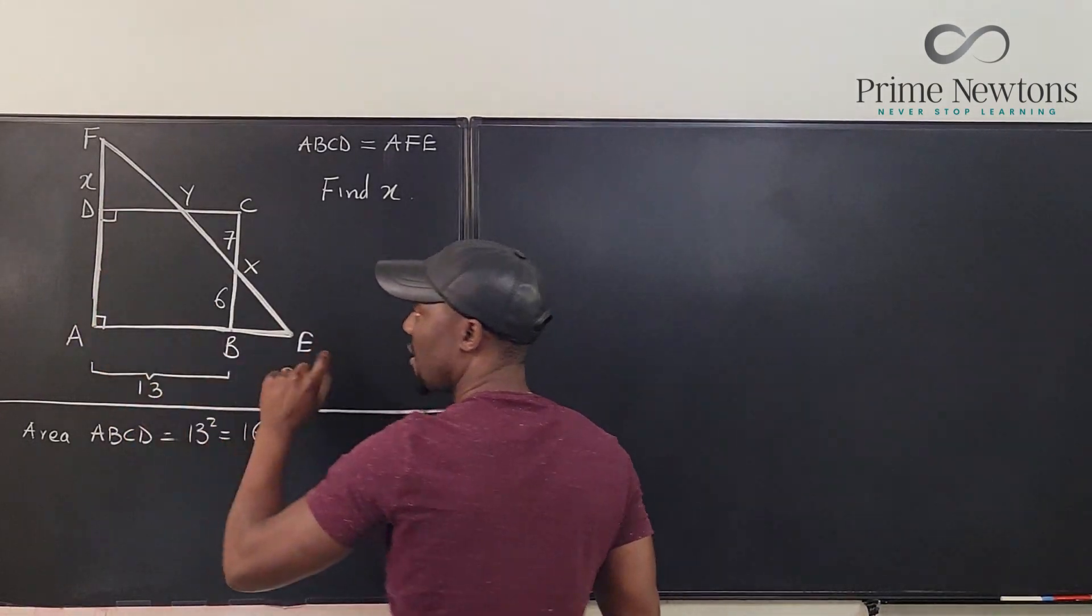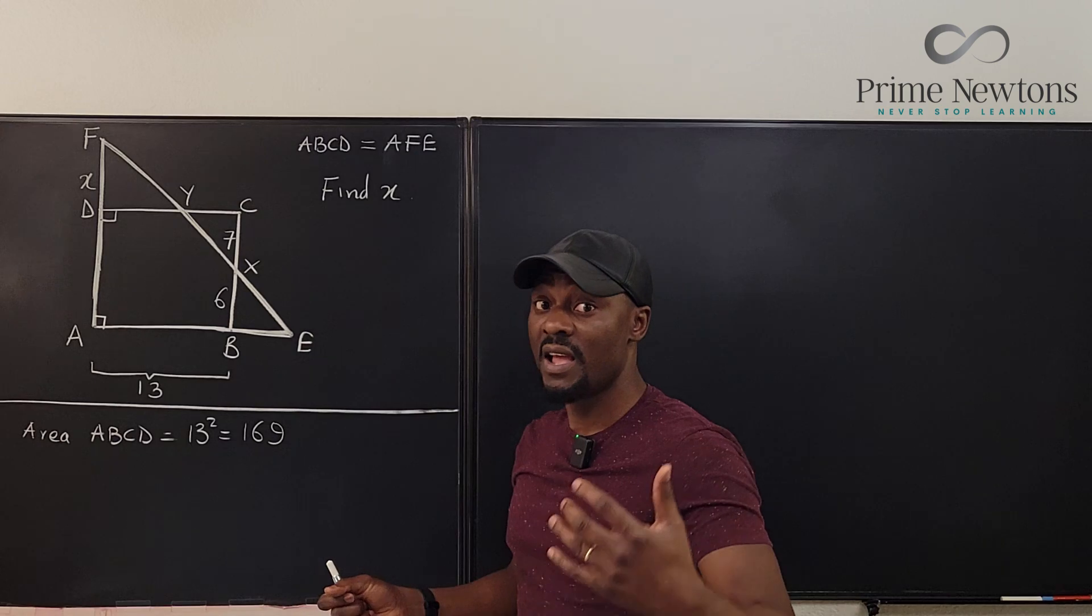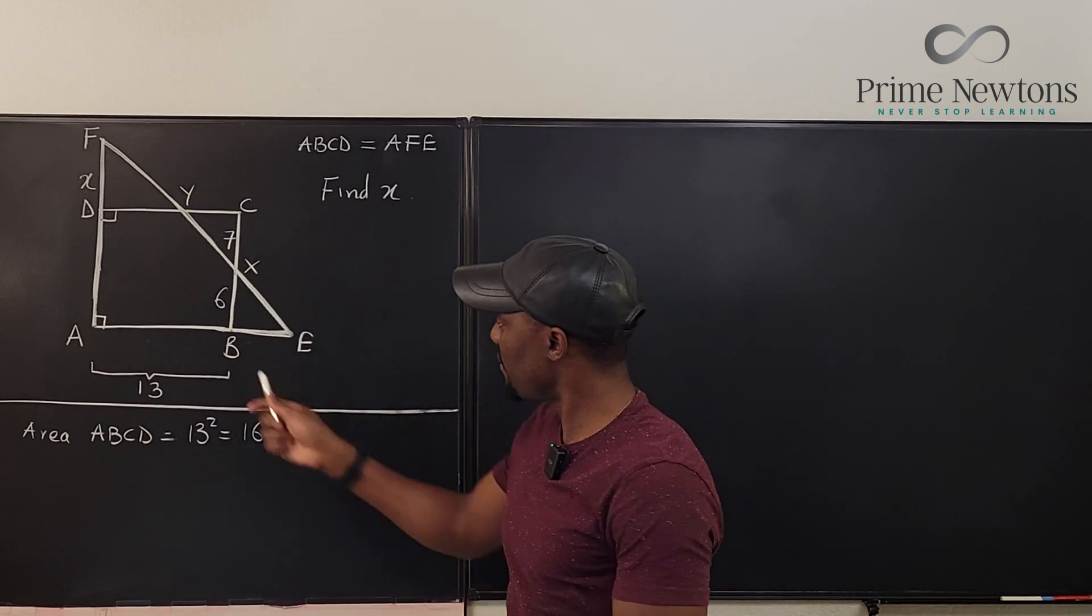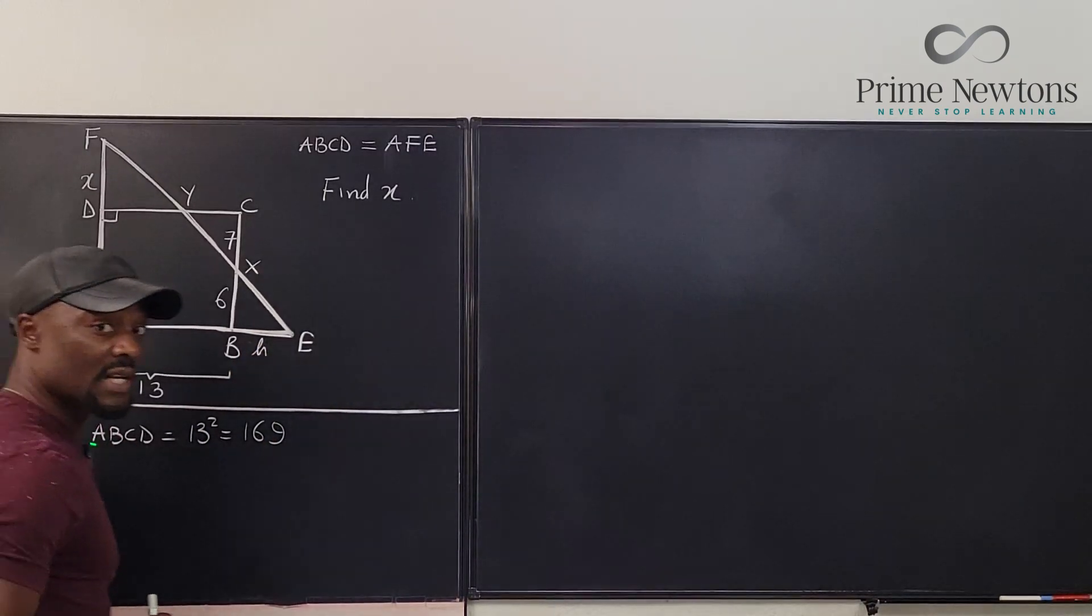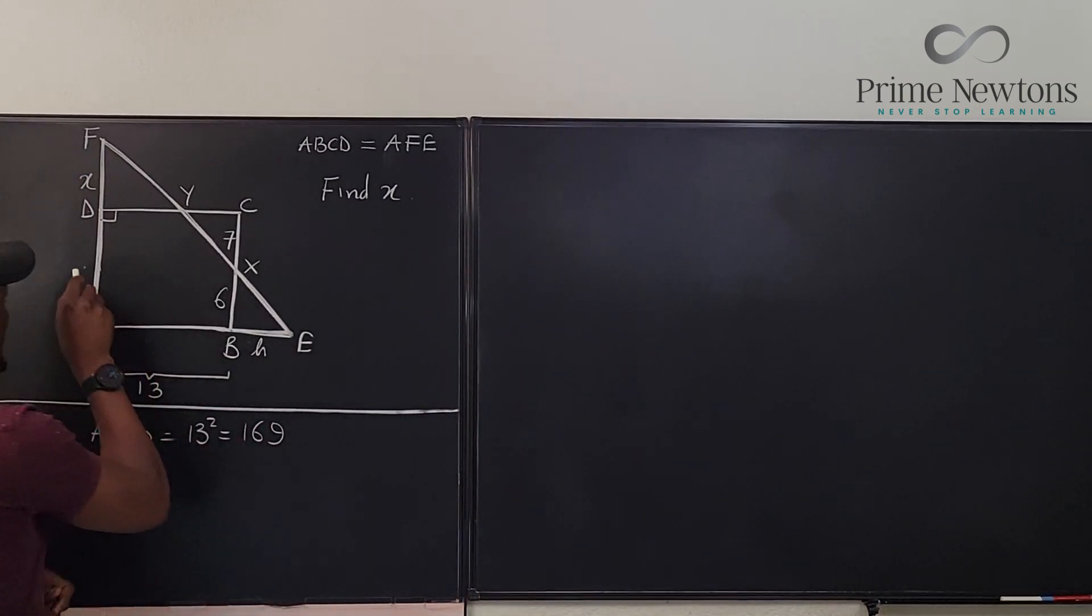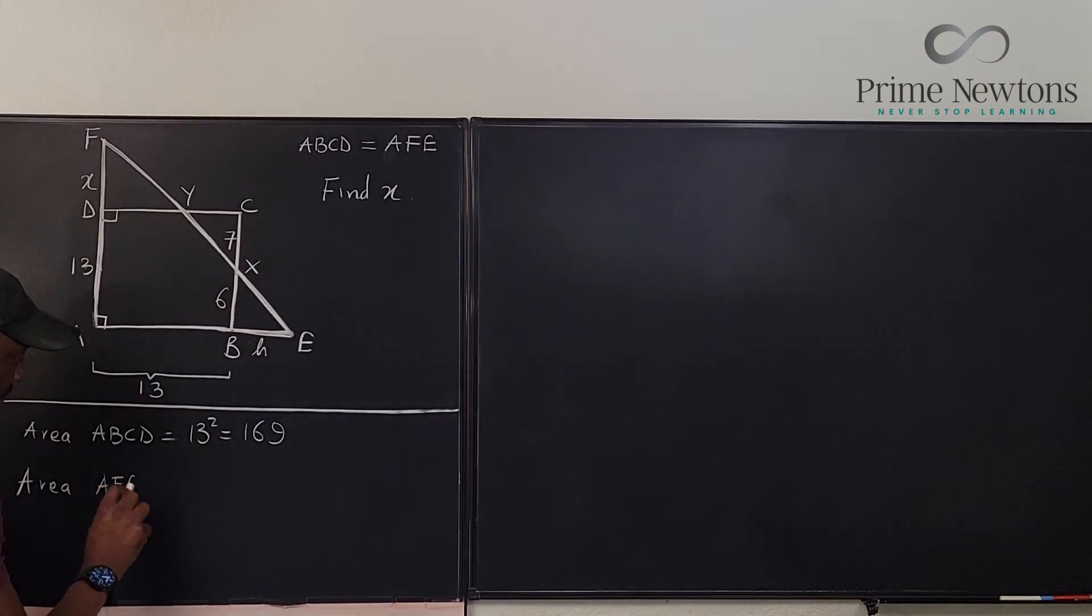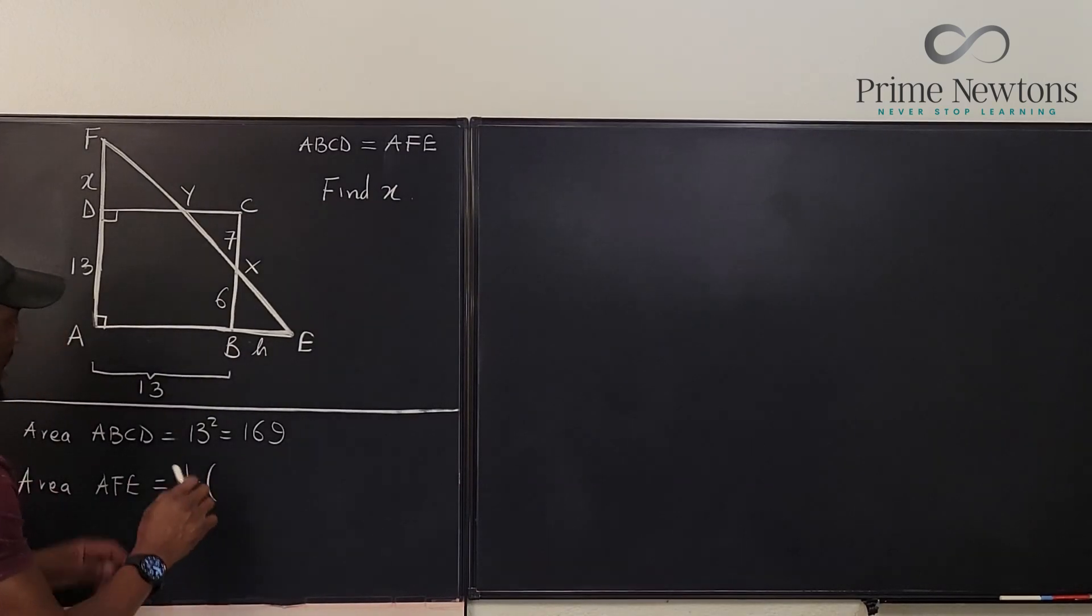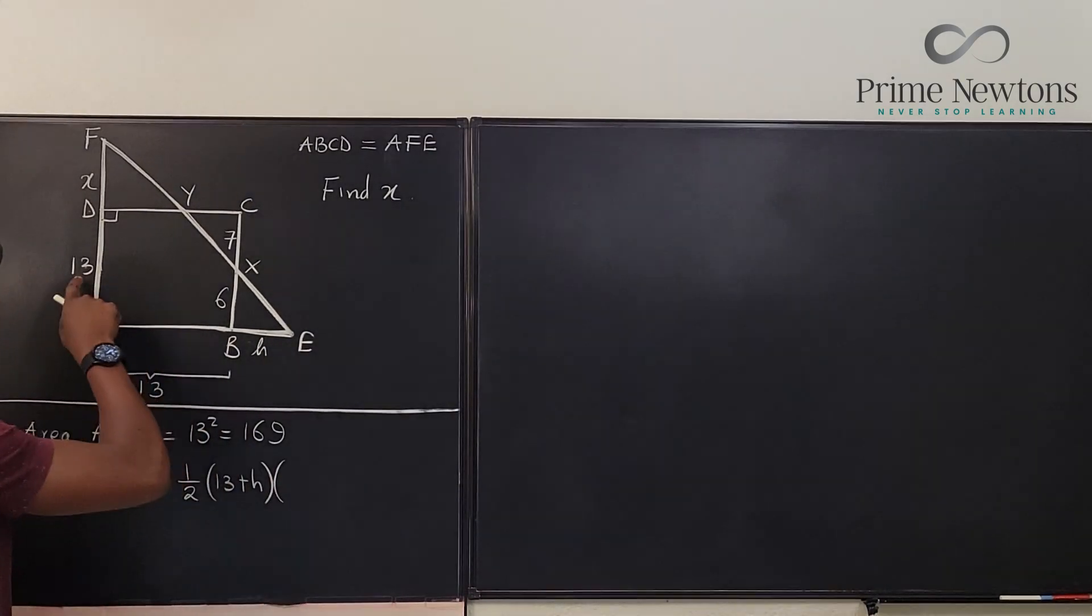The next thing is to find the area of the triangle. Now look, this is a right triangle because it is formed based on the two sides of a square. So it's a right triangle. And we can find the area of the right triangle by saying it is half base, half the base times height. This is 13. I need to know the length from B to E. So I don't know it. I'm going to call it letter H. I'm going to call it H. Now, what else do I need? I need to know the height already. I know the height of this triangle. It's going to be 13 plus X. So area AFE, the triangle will be one half times the base. What is the base? It is 13 plus H multiplied by the height. The height is 13 plus X.